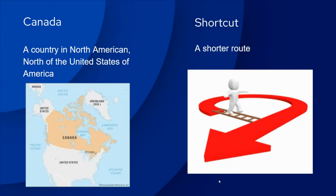Canada — that's a country in North America. It's north of the United States of America, and there's a map of Canada showing it above the United States. Shortcut — that is just a shorter route to get to a place. Instead of following that long red arrow, you can cut right across on that ladder.